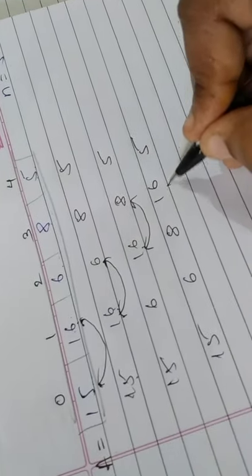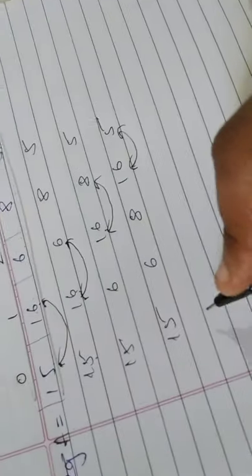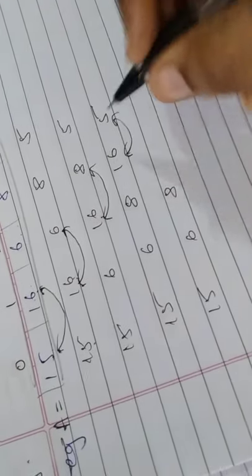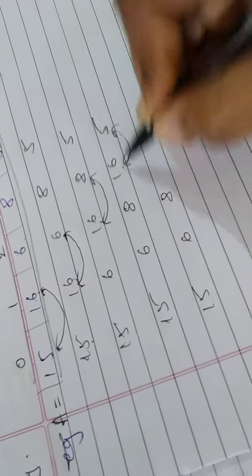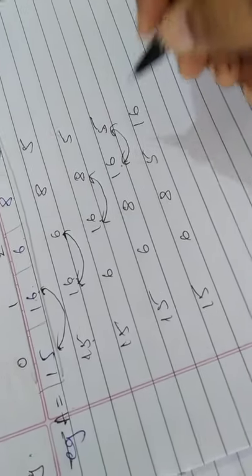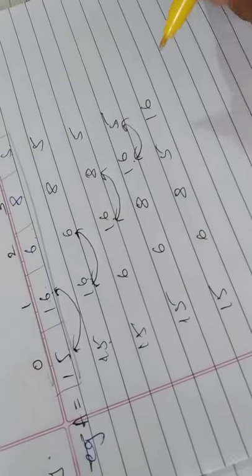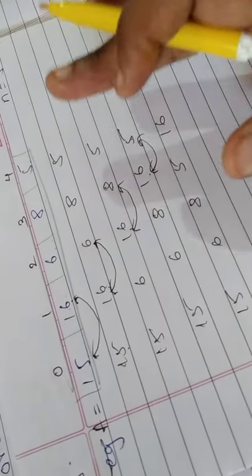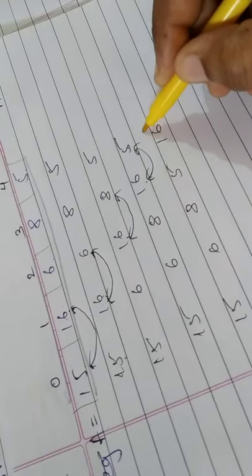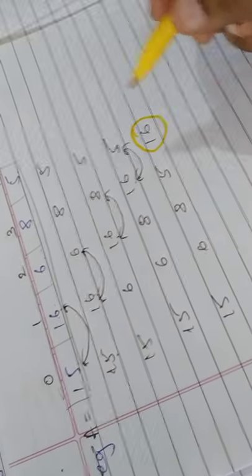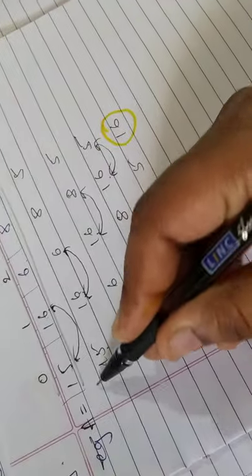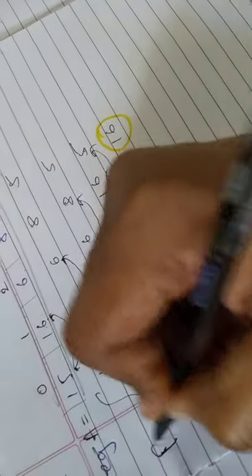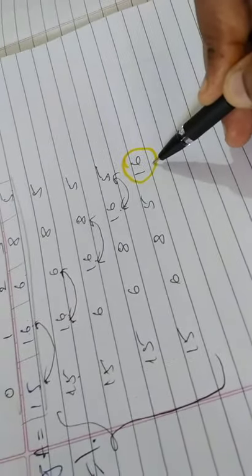Since 5 is smaller than 16, we swap — giving 5 and 16 in that position. Now we have got the highest value, that is 16, at the end of the array. This completes Pass 1 — we have the last element with the highest value.